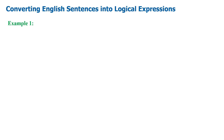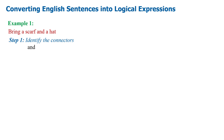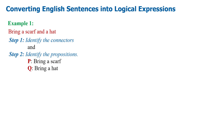Example 1: Bring a scarf and a hat. Step 1 — identify the connectors: the word AND in the given statement represents the connector. Step 2 — identify the propositions: Proposition P is 'bring a scarf'; Proposition Q is 'bring a hat'.